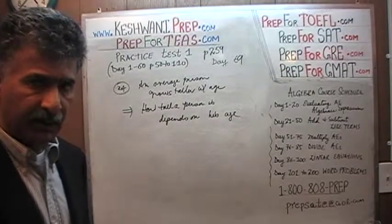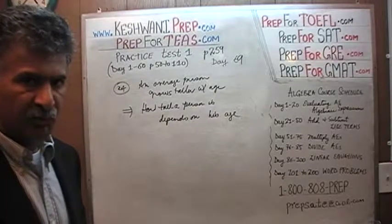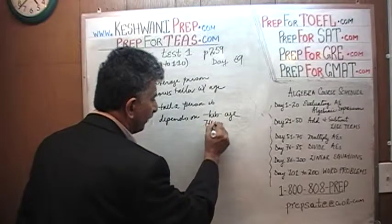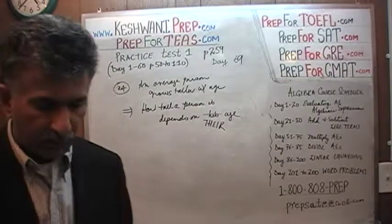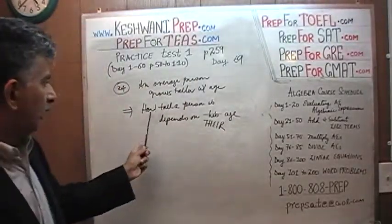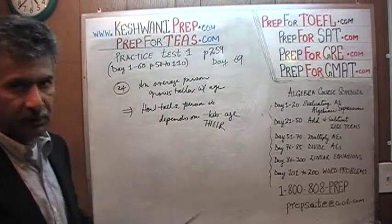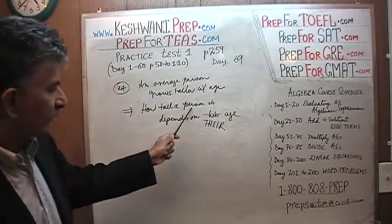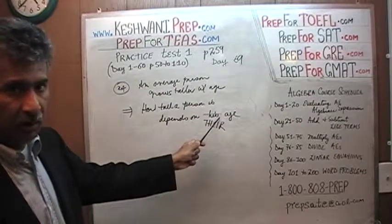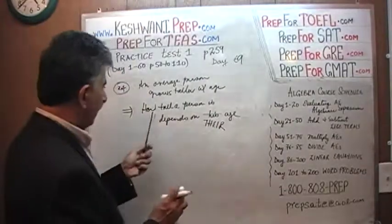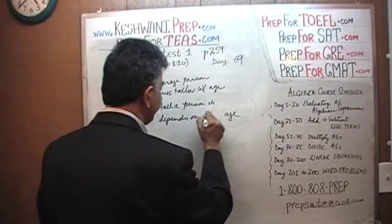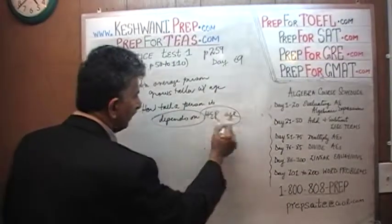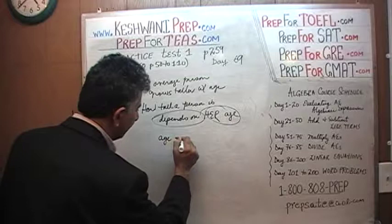Even though we are here for the math part and not the English part, in the English portion they talk about this. I'm going to write the wrong way so you can see it. Typically, you hear people say: how tall a person is depends on their age. But it cannot be 'their' because we are talking about one person. The antecedent here is 'a person' — singular. And therefore, it has to be either 'his age' or 'her age' or 'his or her age.' How tall a person is depends on her age, not their age. It depends on the age, and therefore the age is the independent variable.